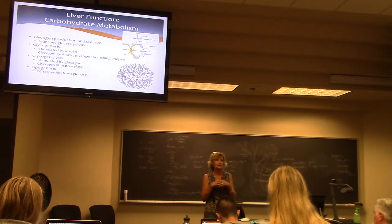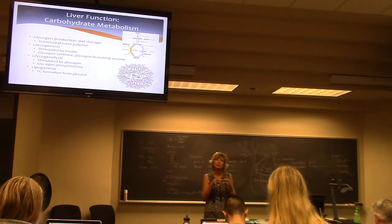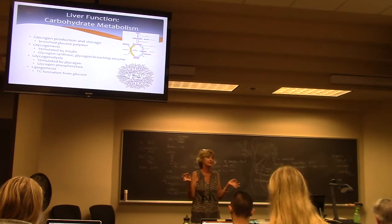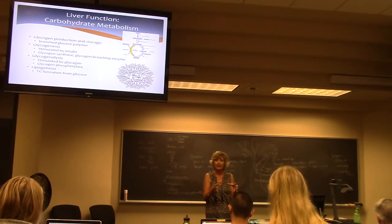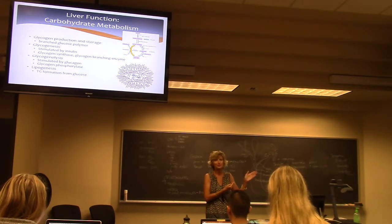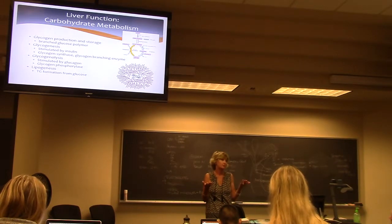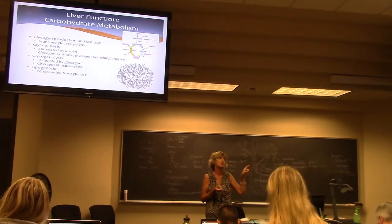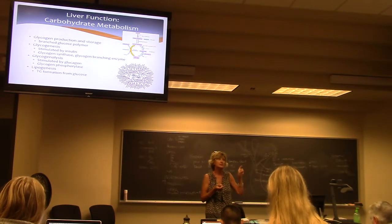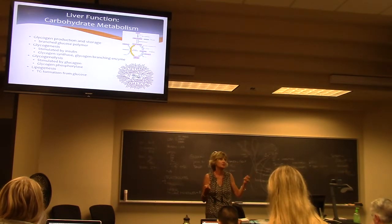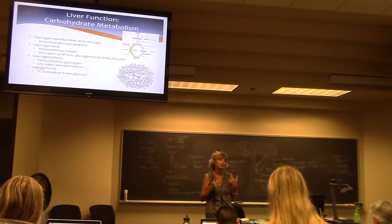Glycogen is a branched polysaccharide. The liver can make these branched linkages instead of just a linear, fibrous polysaccharide. The liver can create glycogen and break down glycogen because it has the enzymatic capacity to do that. Glycogenesis is to make glycogen; glycogenolysis is to degrade glycogen—so you can store glucose or release glucose. Lipogenesis is also part of what the liver does, because you can actually generate lipids from glucose.